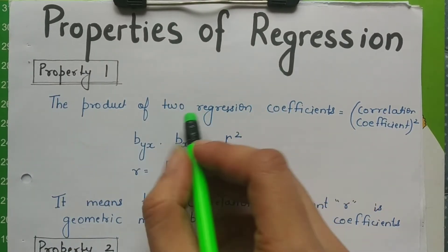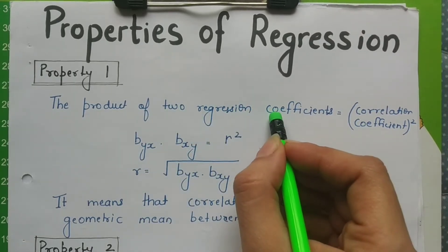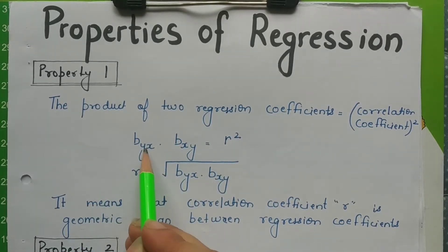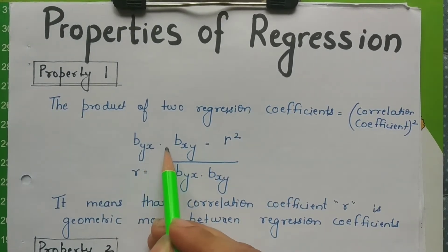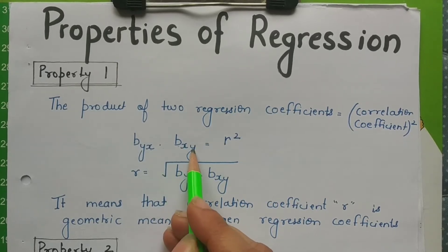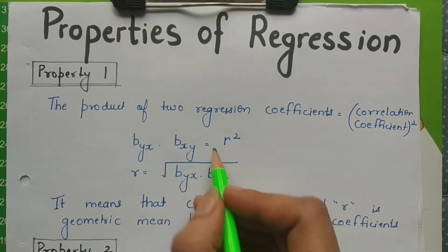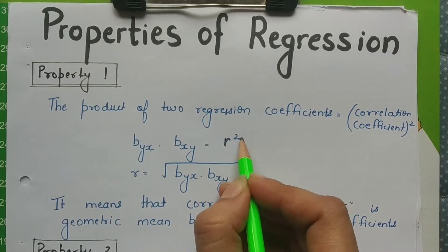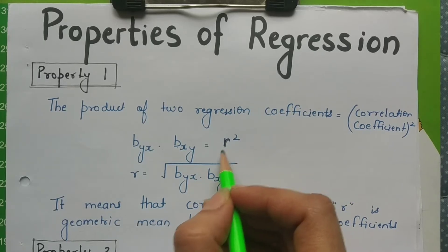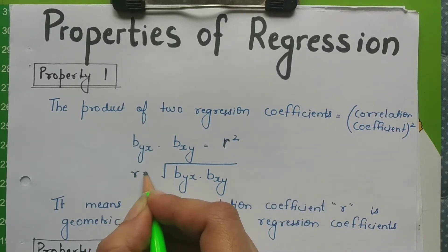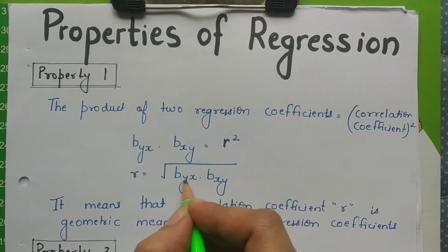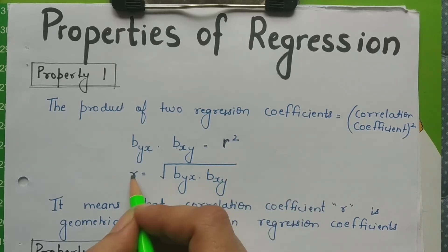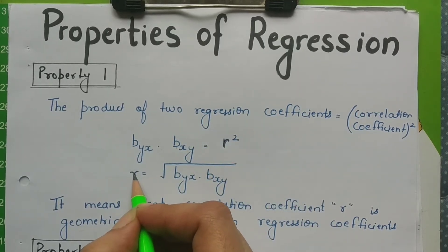Regression's first property is that if we multiply the regression coefficient of y on x with the regression coefficient of x on y, it will give us the square of Karl Pearson's coefficient of correlation, i.e., r². So we can also write it the other way: R is equal to the square root of b_yx into b_xy, because taking the square root on both sides gives us the exact value of R.